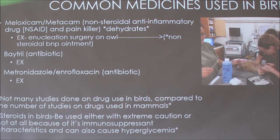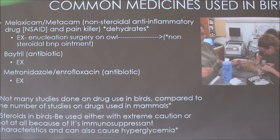Whenever we tried to take the owl off the ointment, the eye condition would always get worse. This image shows an enucleation surgery, which is the removal of that eye. The only way it is ethical to release a bird with one eye is if it's something like an owl — they can still turn their head — whereas smaller birds with eyes on the side would not be as ethical to release.